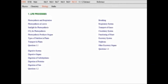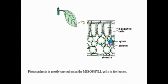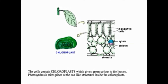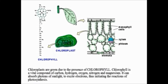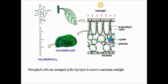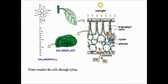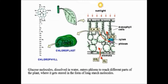Let's see photosynthesis at the leaves. Photosynthesis is mostly done at mesophyll cells. These cells contain chloroplasts. Chloroplasts contain chlorophyll molecules. They capture sunlight. Carbon dioxide comes in and oxygen goes out through stomata. Water reaches through the phloem, and food is also transported through the phloem.